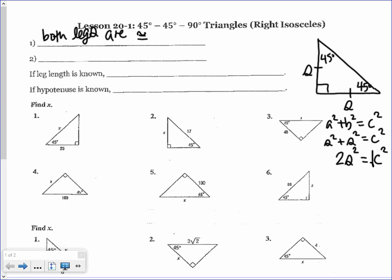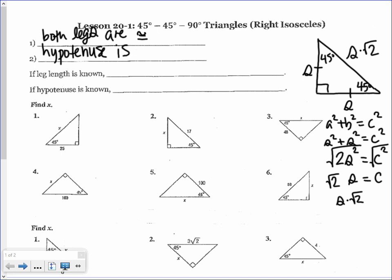We're looking for the hypotenuse C, so we take the square root of both sides. The square root of C squared is just C. The square root of 2 stays as √2 since it doesn't reduce to a whole number. The square root of S squared cancels to give us just S. So our hypotenuse is √2 times S, which means the hypotenuse equals the square root of 2 times the leg.